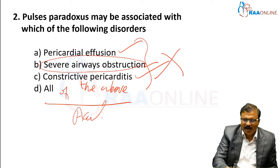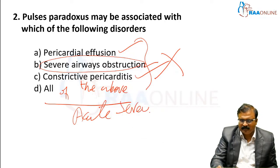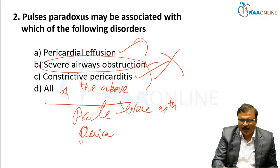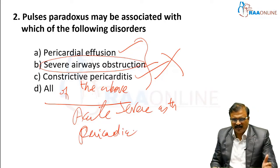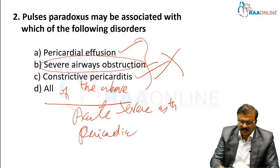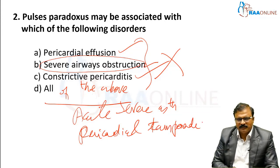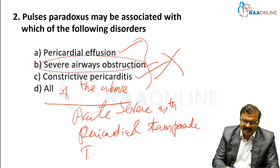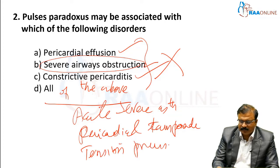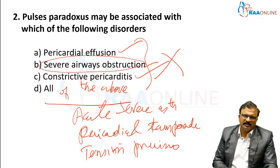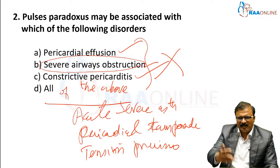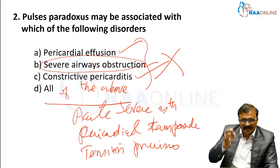To be precise about where it is seen: acute severe asthma, cardiac tamponade, and tension pneumothorax. Note that not all pericardial effusions will cause tamponade. All of the above is used as a distractor, and severe airway obstruction may be a choice if no other options are available.